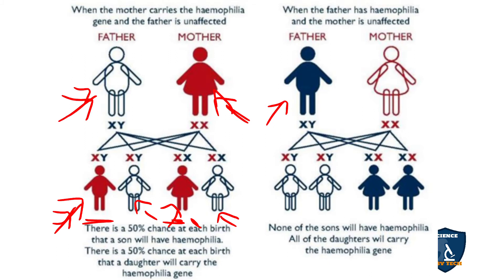When the carrier mother and normal father cross, among four children — two sons and two daughters — one son is hemophilic and one son is normal. Among the daughters, one is a carrier and one is normal. Girls are carriers but unaffected; hemophilia appears in sons.